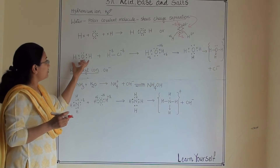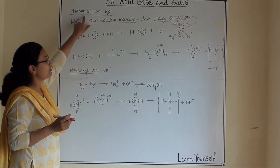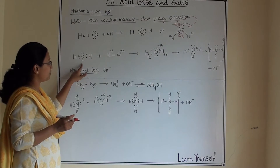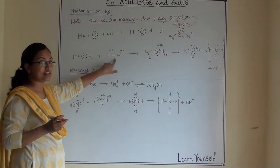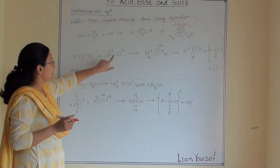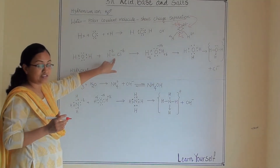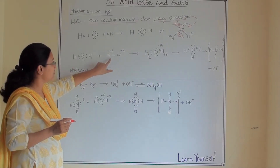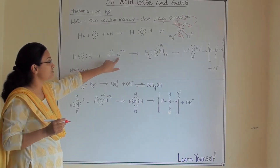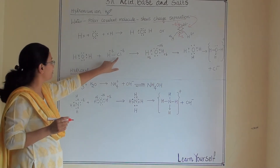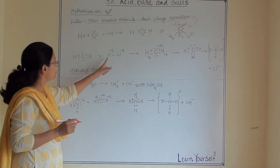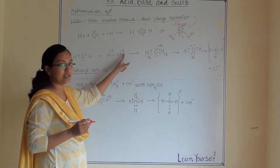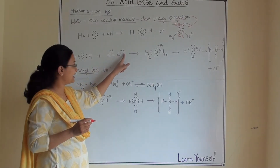First, we will see how the hydronium ion will form. This is our water molecule when we are adding an acid — HCl, hydrochloric acid — which is again a polar covalent molecule, so it also observes a charge separation within the molecule. H will carry delta positive charge and chlorine will carry delta negative charge.